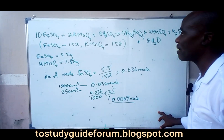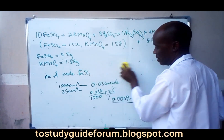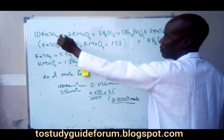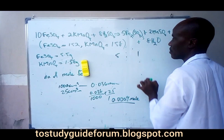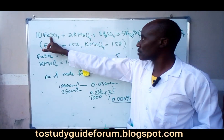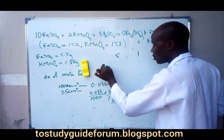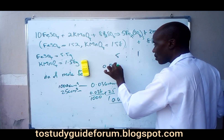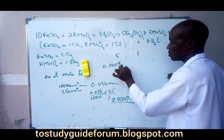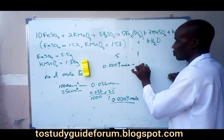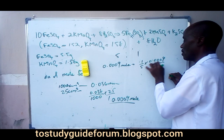Now we go back to what we have in the chemical equation. Remember the relationship I told you about: the ratio is 5 is to 1. That means five moles of iron(II) tetraoxosulphate combine with one mole of potassium permanganate. So 0.0009 moles of iron(II) tetraoxosulphate will correspond to one-fifth times 0.0009 moles of potassium permanganate.